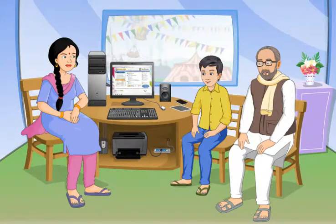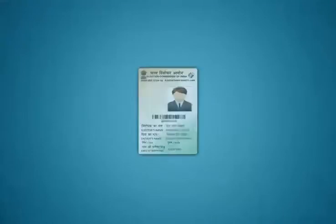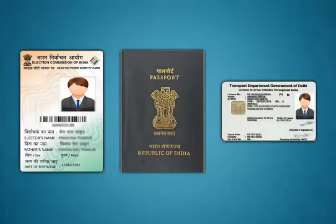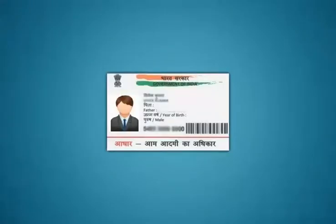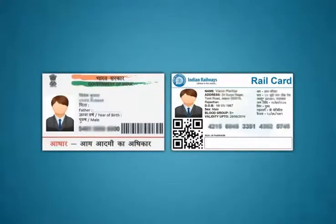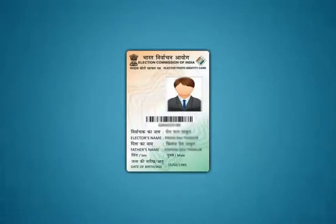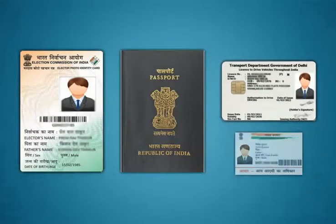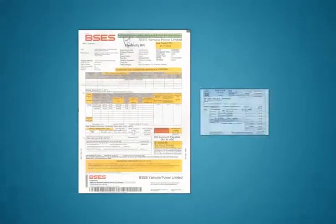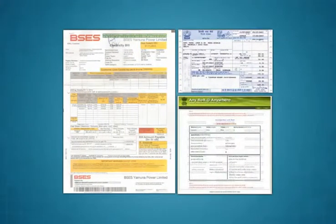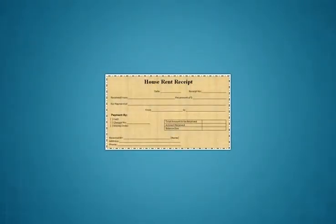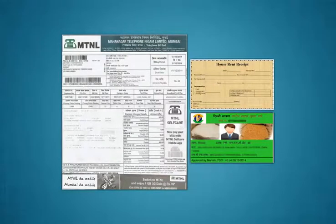Do I need to attach any document with this form? Yes, you need to attach the following documents with the caste certificate form. Anyone identity proof like voter ID card, passport, driver's license, RSBY card, Aadhar card, identity card issued by government or semi-government organizations, PAN card or MNREGA job card. Anyone address proof like voter ID card, passport, driver's license, Aadhar card, electricity bill, water bill, extracts of 7x12, 8A or rent receipt, telephone bill, ration card or property tax receipt.